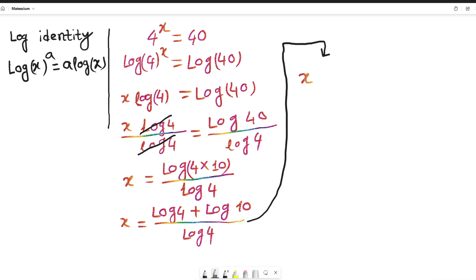Left-hand side is x and right-hand side is log 4 divided by log 4. We can separate this way: log of 4 divided by log 4, plus sign, and then this log 10 divided by log 4.